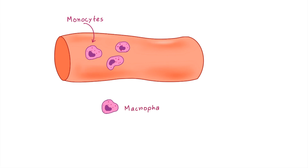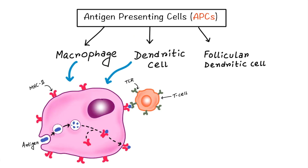Dendritic cells are the most important antigen presenting cells for initiating the T cell response against protein antigens. They work in a similar fashion to macrophages — they take up the antigen with a phagocytic process, this antigen is processed internally by MHC class 2 molecules, and then the processed antigen is presented on the surface of the cell by MHC class 2 molecule.